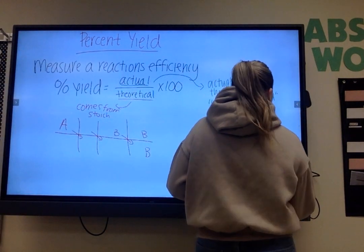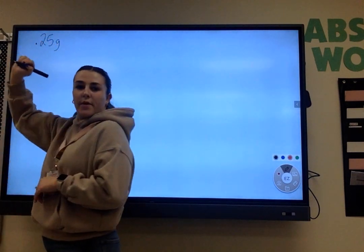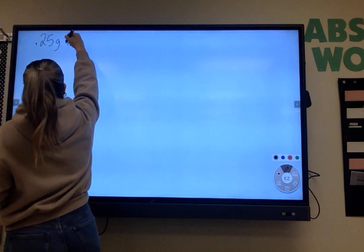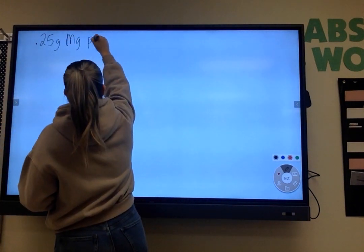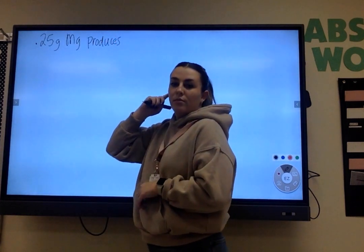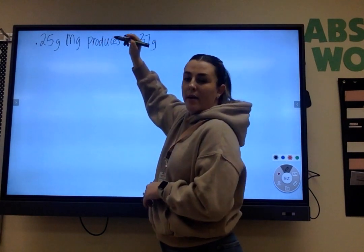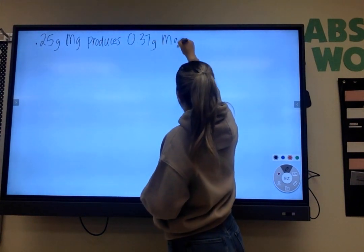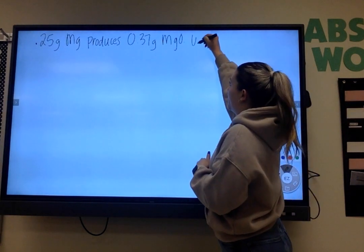So let's go ahead and write down a practice problem real quick. Let's do 0.25 grams of magnesium, so just magnesium by itself, Mg, produces 0.37 grams of magnesium oxide, MgO. And then after that, it will say, what is the percent yield?